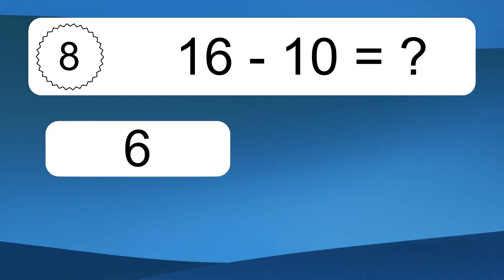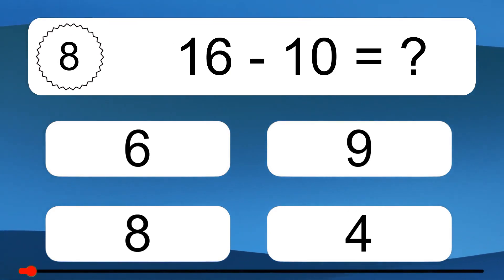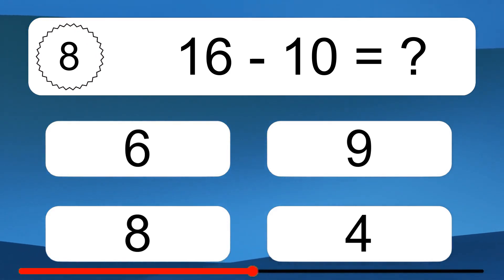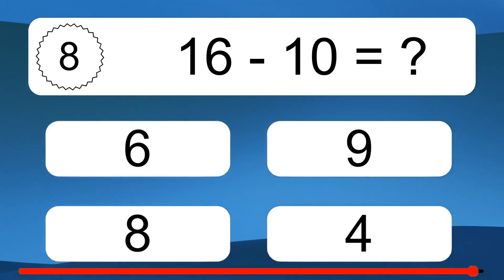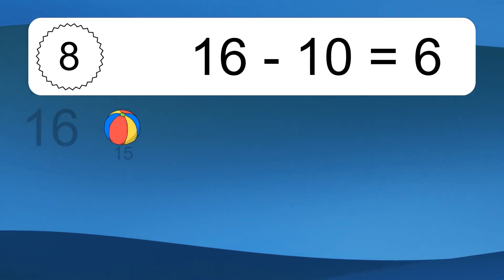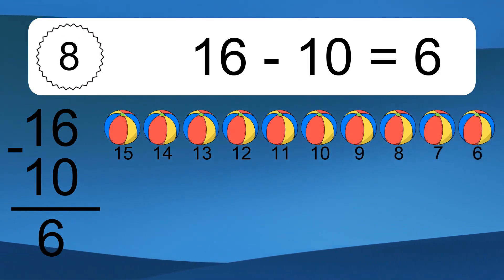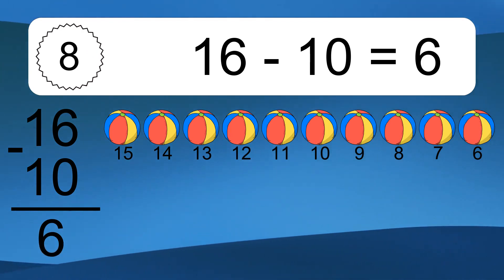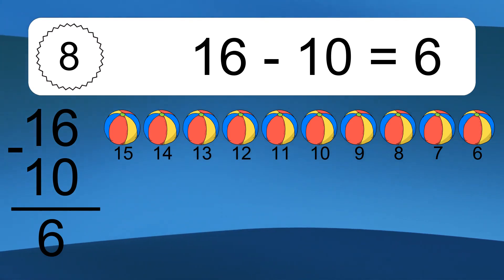16 minus 10 equals what? 16 minus 10 equals 6. Let's count it. 15, 14, 13, 12, 11, 10, 9, 8, 7, 6.